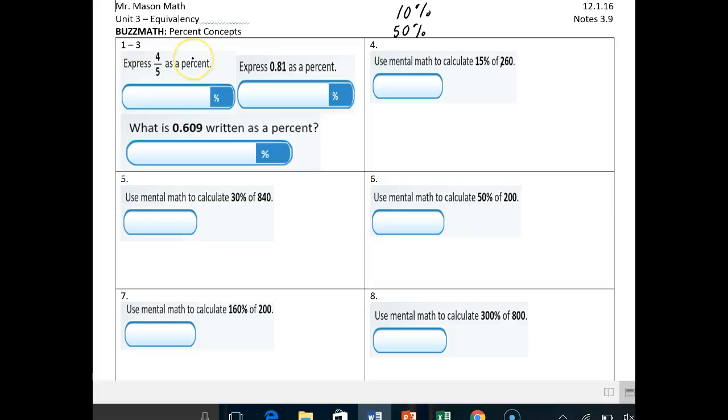On Buzz Math, questions one through three are very straightforward. Express four-fifths as a percent. We can either divide five into four and put decimal, or we can do four-fifths and say let's make that base 10 by saying times two times two and you get eight over 10. So 0.8 or 80%. 0.81, that's just moved two times to the right and that gives us 81%. And then 0.609, no matter how long the number is, it's just two times the right. So 60.9%. Please use these notes today when you're using Buzz Math. Look at your notes. Look at what we did.